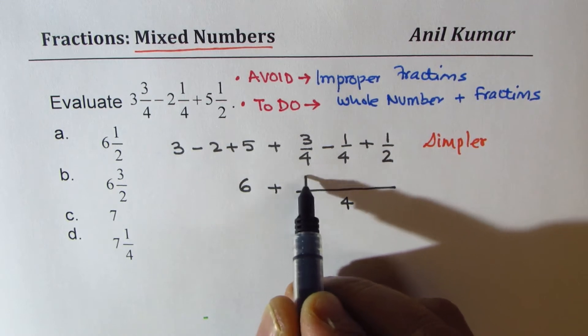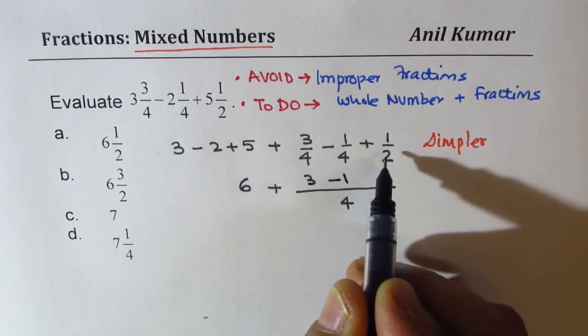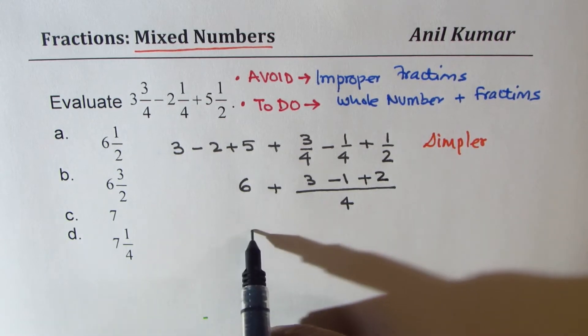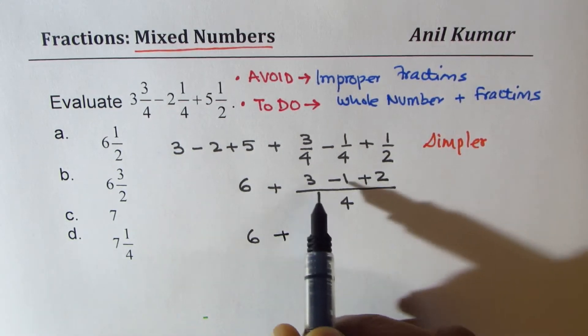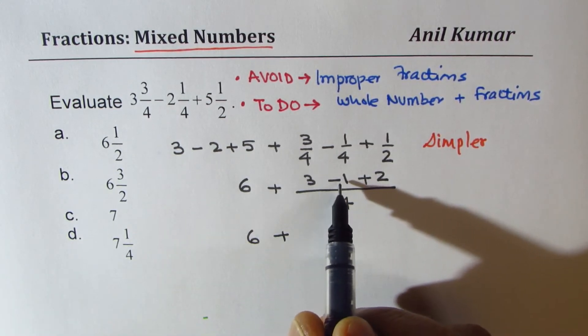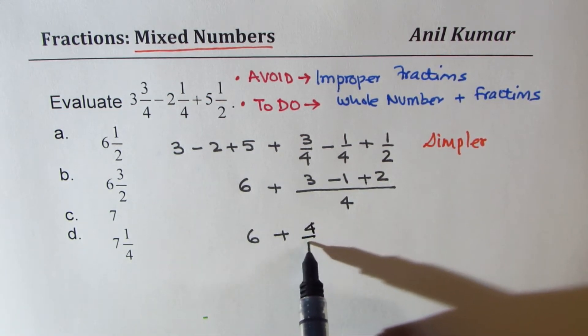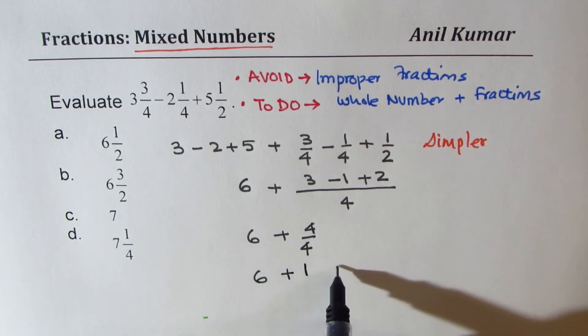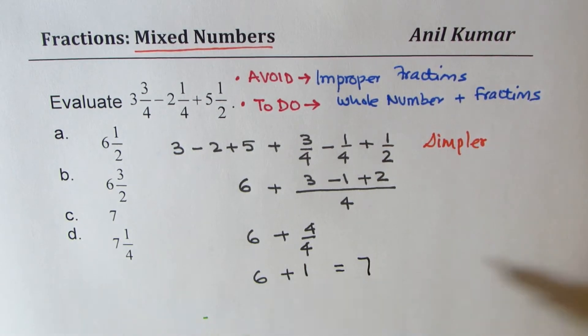Plus, you have to do common denominator, which is 4. Write the numbers, which are 3 minus 1 plus 2. So 6 plus 4/4, that is 1. The number is 7. So 7 is the right choice.